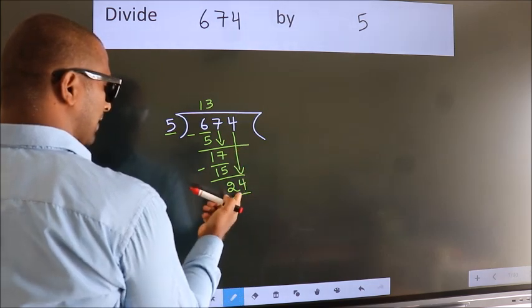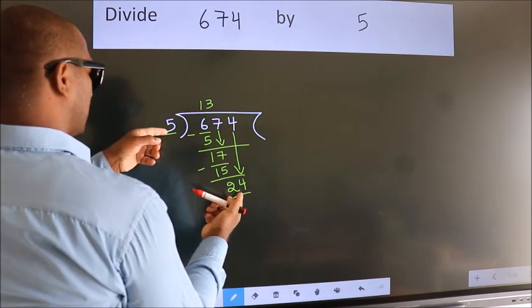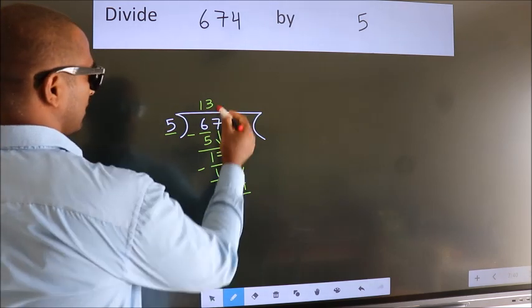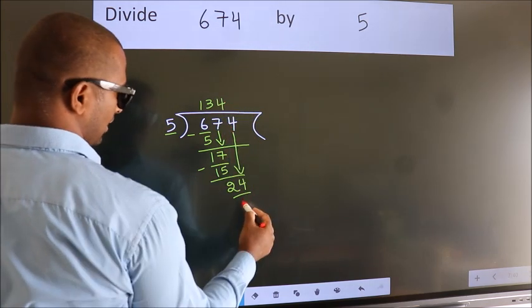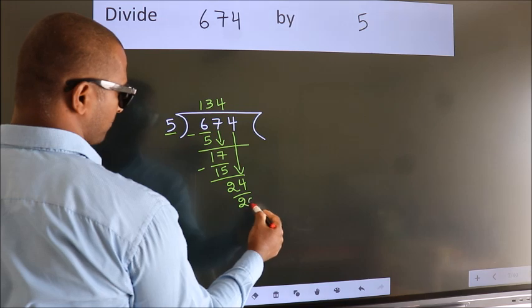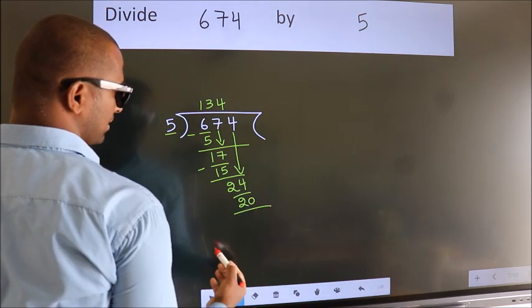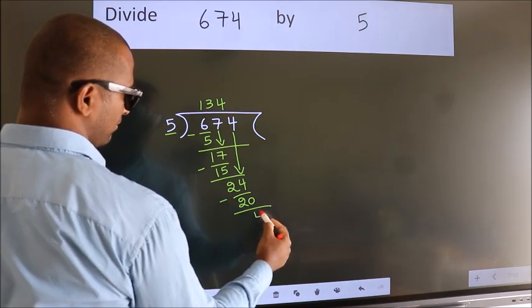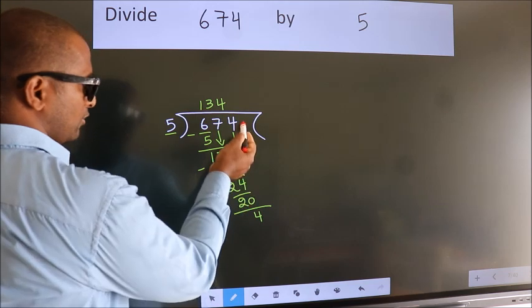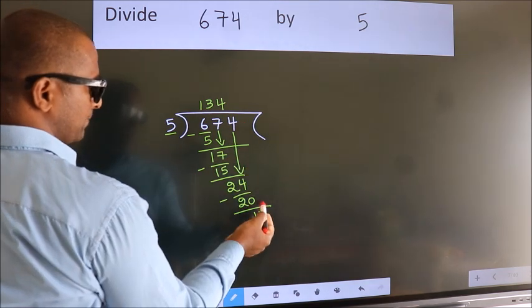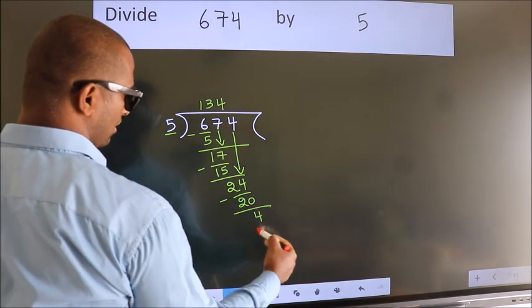A number close to 24 in the 5 times table is 5 fours 20. Now we subtract. We get 4. No more numbers to bring down, so we stop here.